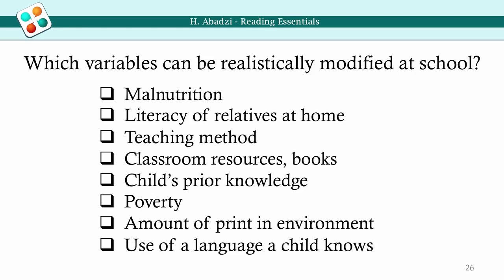Potentially modifiable variables include: malnutrition, literacy of relatives at home, teaching method, classroom resources and books, child's prior knowledge, poverty, amount of print in the environment, and use of a language a child knows. Much is written about the many variables impacting the performance of the very poor, but which ones can governments mitigate with policies? Which ones can be improved at the school level? These are the ones to focus on. The next modules will focus on the actionable variables.